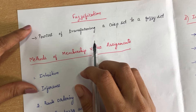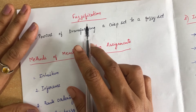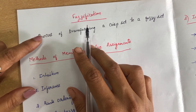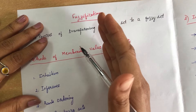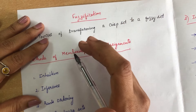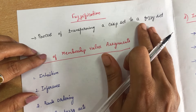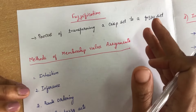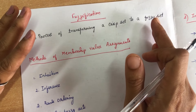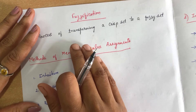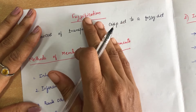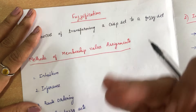Good morning everyone. This is Preeti here. Today I come up with a different topic in fuzzy logic, that is fuzzification. Fuzzification is a process of transforming a crisp quantity into a fuzzy quantity — converting a crisp set into a fuzzy set, or a crisp input variable into a linguistic variable, that is a fuzzy variable. De-fuzzification is the reverse process, converting fuzzy quantities back into a crisp quantity.